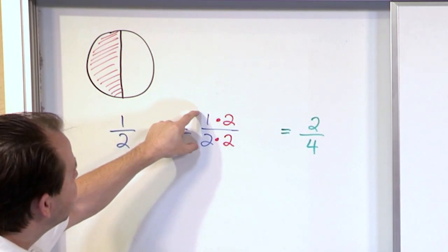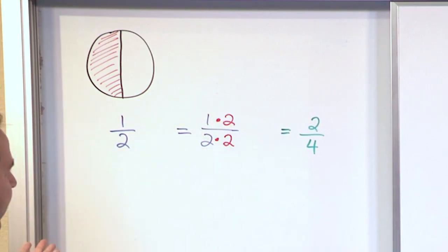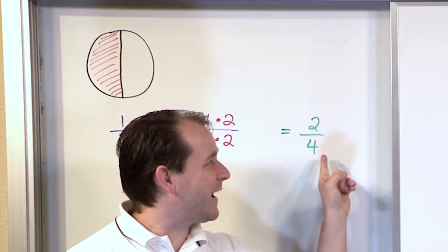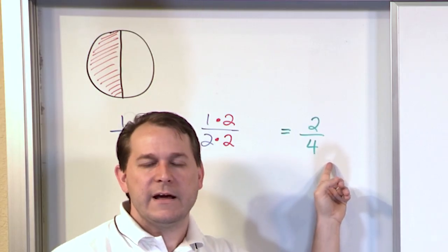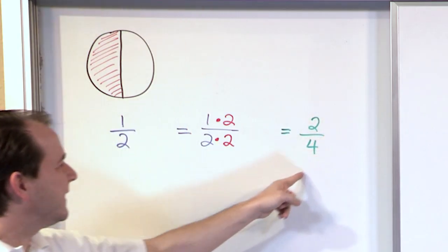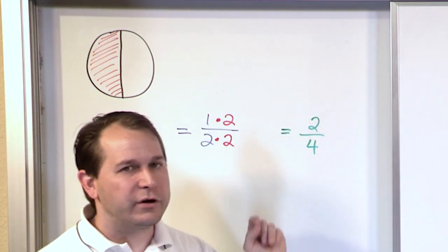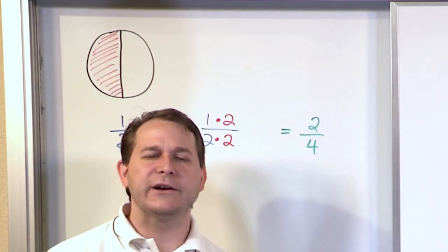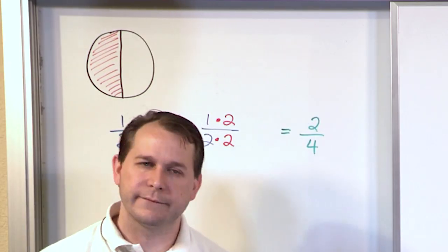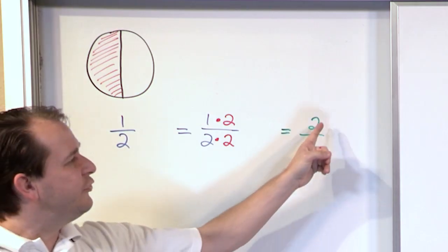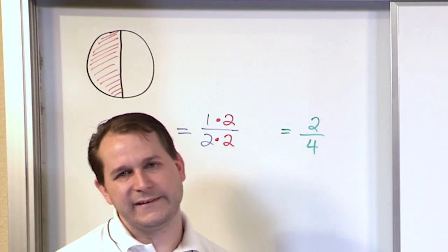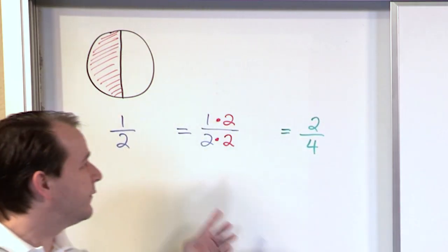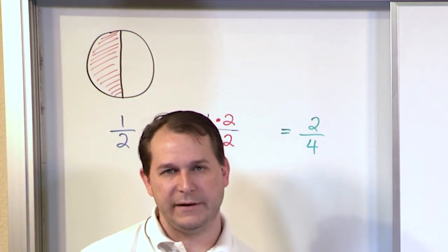When I multiply the top and the bottom by a number, even though it makes the fraction look different in the end, it's exactly equal to the fraction we started with. One times two is two, and two times two is four. So that's something you have to get used to seeing — two fractions can be the same thing but they just might look different. Two out of four pieces of a pizza is the same thing as one out of two pieces of a pizza.